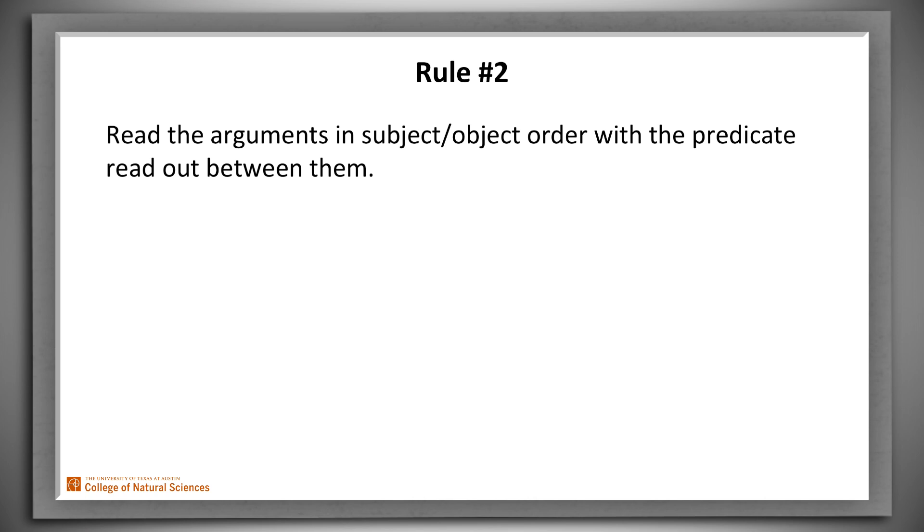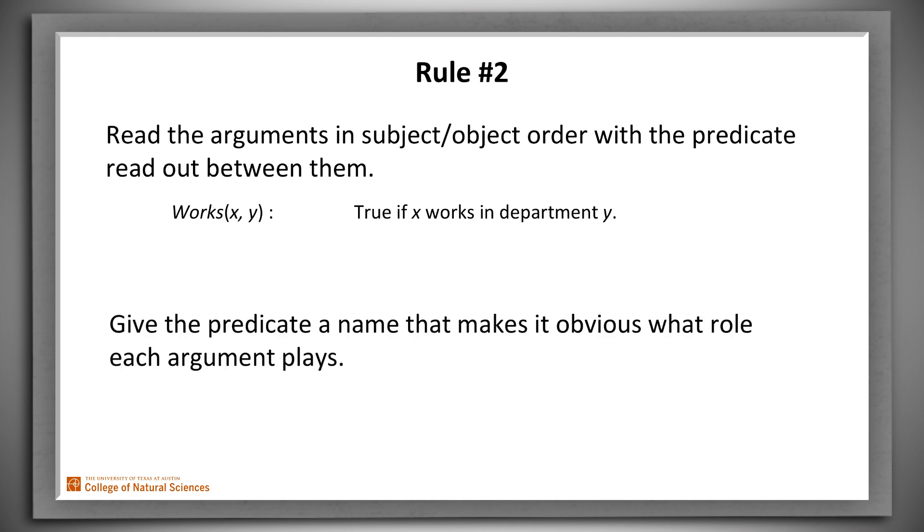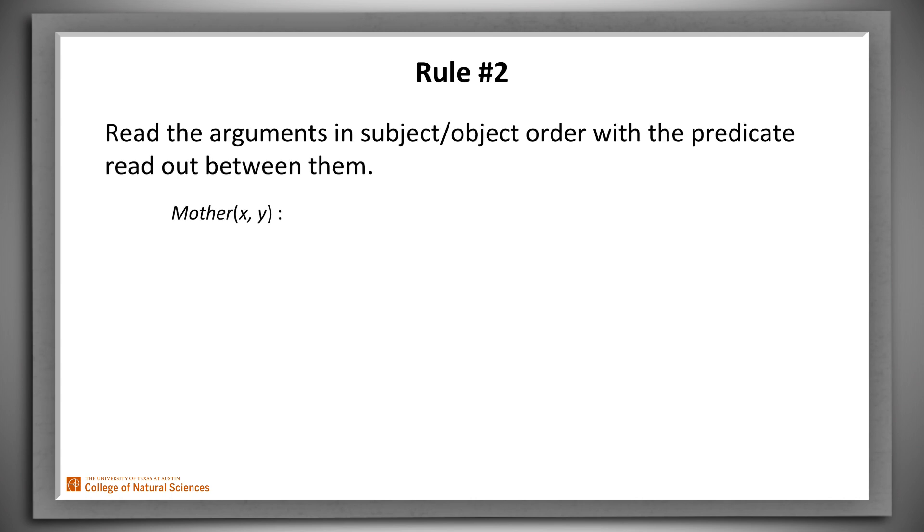Rule number two: When defining a predicate of two arguments, write it so that it reads like a sentence with the first argument as the subject and the second argument as the object. So Works of X and Y is true if X works in department Y. And choose a predicate name that makes it obvious which role each argument plays. So works_in is actually a better choice than works.